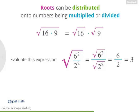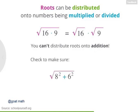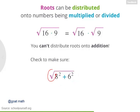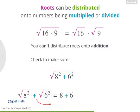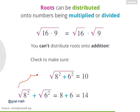So now you've distributed roots onto numbers being multiplied or divided. We also said you can't distribute roots onto numbers being added or subtracted — let's make sure that's right. As an example, let's look at the square root of 8 squared plus 6 squared. You might think we can distribute the root: the square root of 8 squared plus the square root of 6 squared, giving 8 plus 6. But 8 squared plus 6 squared is 100, so that square root is 10 — while 8 plus 6 equals 14. So these two expressions are different.